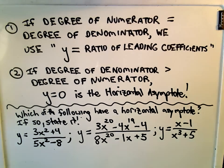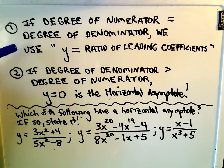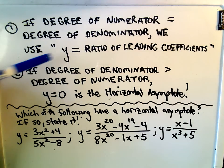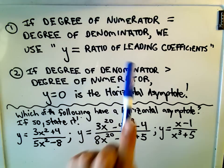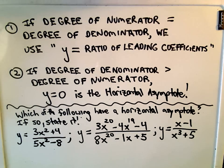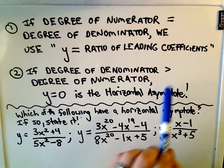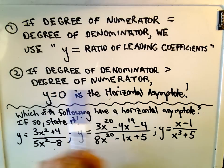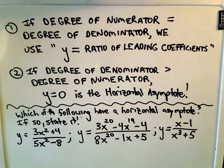It turns out if the degree of the numerator is equal to the degree of the denominator, the horizontal asymptote, the line y equals, we're just going to take the ratio of the leading coefficients. If the degree of the denominator is greater than the degree of the numerator, simply the line y equals zero is going to be a horizontal asymptote.